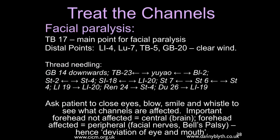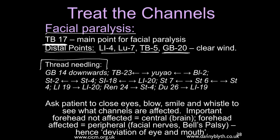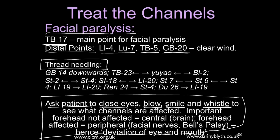For facial paralysis, first choose appropriate distal points for clearing wind: Large Intestine 4, Lung 7, Triple Burner 5, Gallbladder 20. Triple Burner 17 is a really important local point I nearly always use. Then you can do thread needling — you need to be properly trained in this style, essentially needling superficially from one acupuncture point to another. To know which points to use, you need to palpate and observe. Ask the patient to close their eyes, blow as if blowing up a balloon, smile, and attempt to whistle — this gives you a good idea of which channels are involved. Then palpate; you must use your hands and have hands-on skills before doing this sort of treatment.